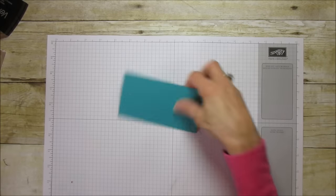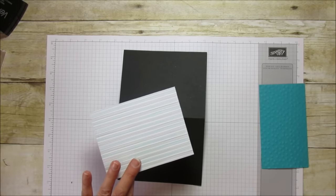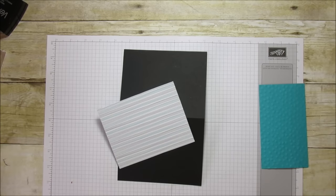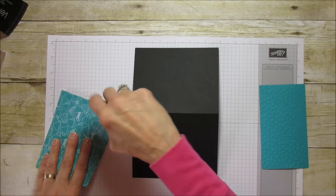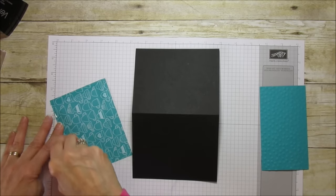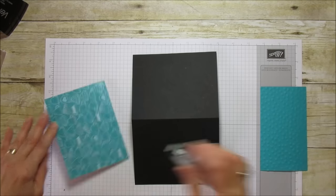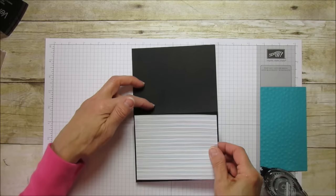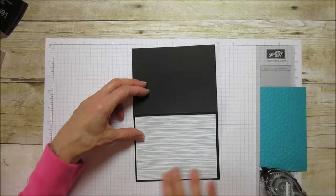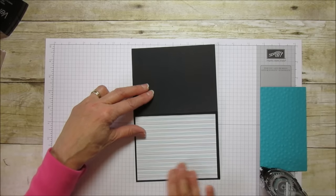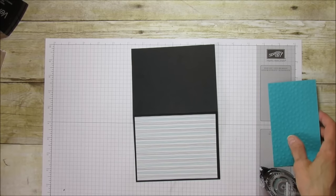Let's put the card together. First we'll put our piece of designer series paper. I'm going to grab some of my snail adhesive. This is actually running the opposite way than I cut it before but that's okay, it's still going to look really cute.